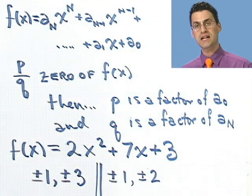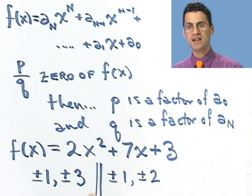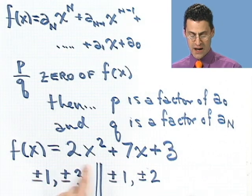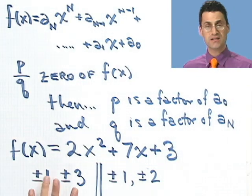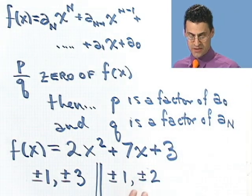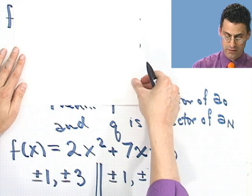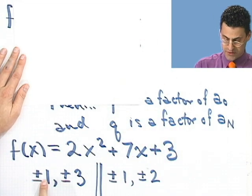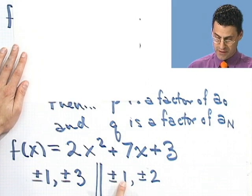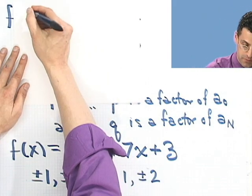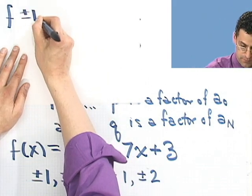So therefore, a complete list of all the possible candidates for rational roots of this polynomial are going to be these numbers over these numbers. So let's see what that would be. Well, one possibility would be plus or minus 1 over plus or minus 1. OK? So what would that be? That would be plus or minus 1. So there's one candidate.